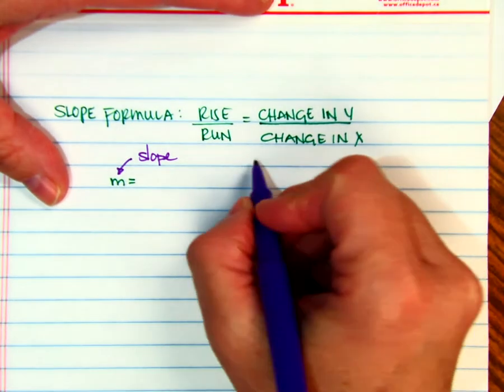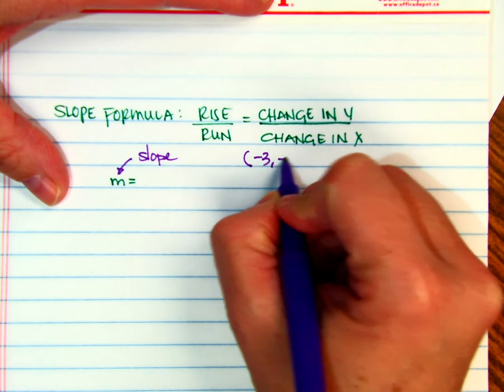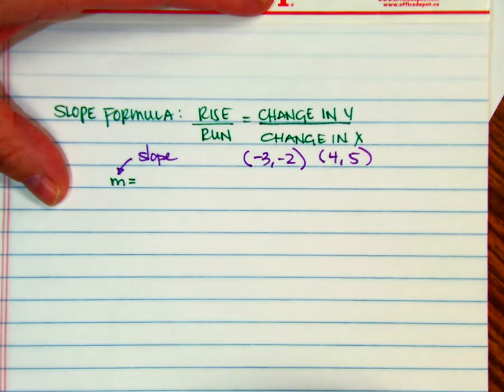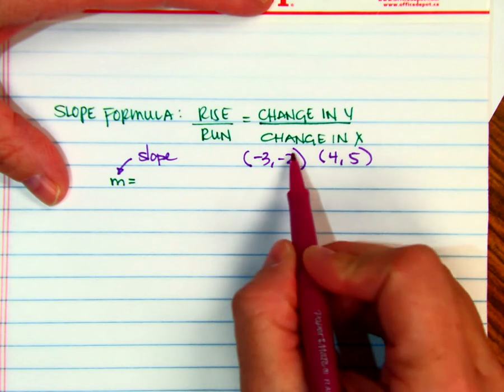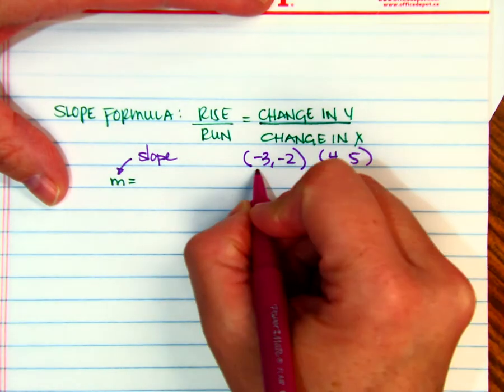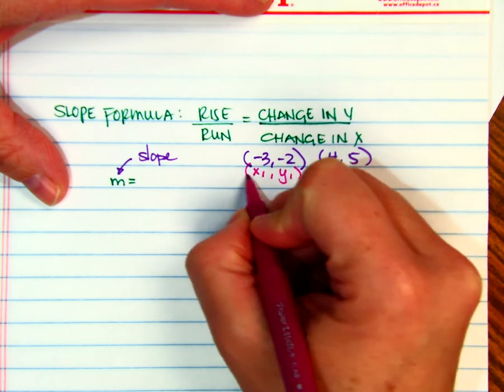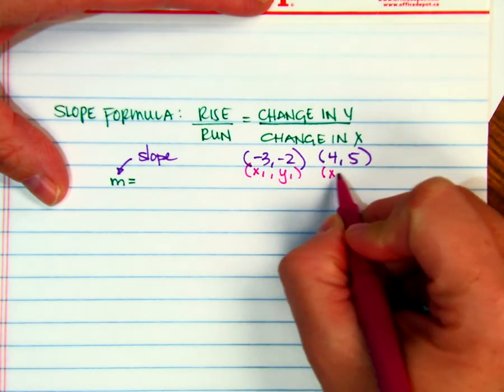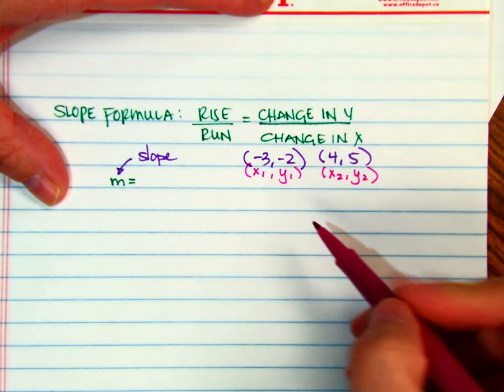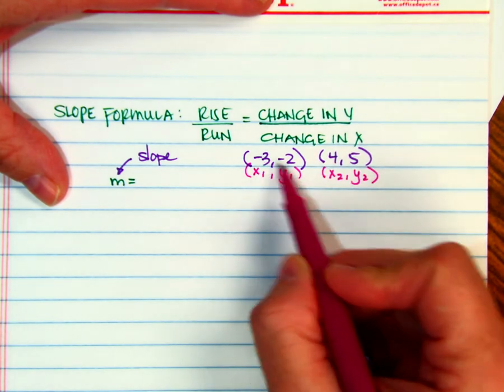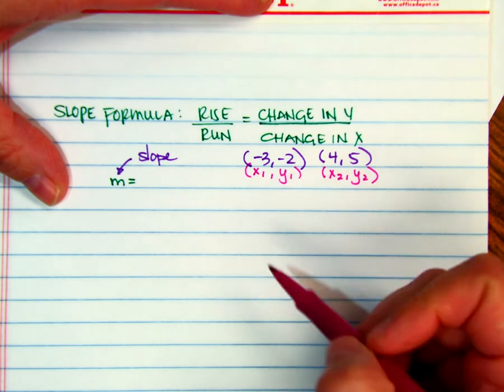And when we have two points, let's go back to the negative 3, negative 2, and the 4, 5 ordered pairs. The sub numbers that you are going to see in the formula are just to be able to tell the difference between this ordered pair and this ordered pair. So I'm going to label this one as x sub 1, y sub 1, and this is x sub 2, and y sub 2. Notice the little teeny numbers are down below. As soon as they start floating up to the top, that's when they become exponents, and we don't want that to happen.